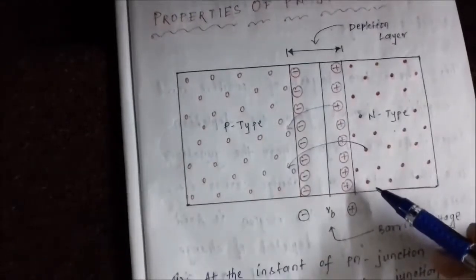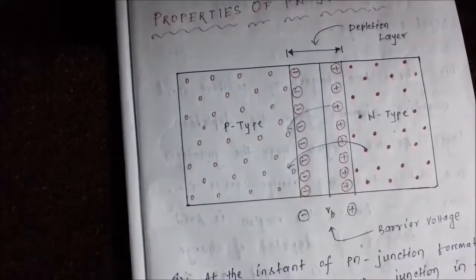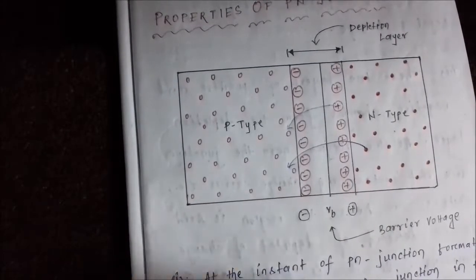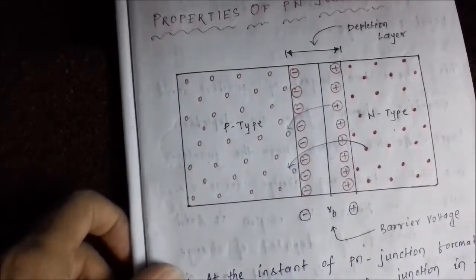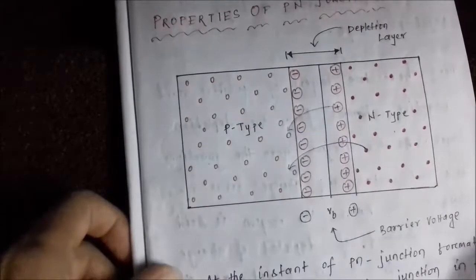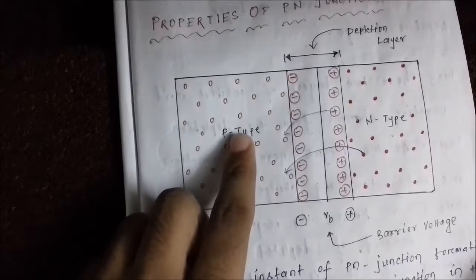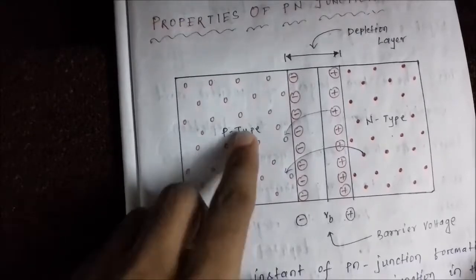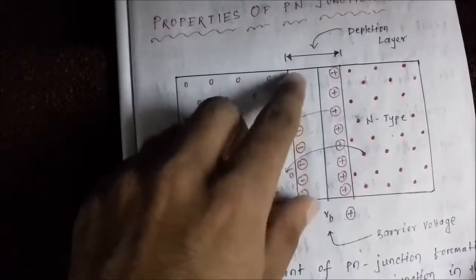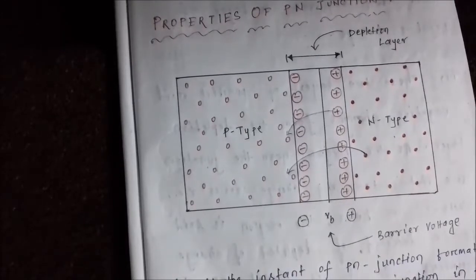Now we know that when a substance loses electrons it acquires a positive charge. As a result, the N type material acquires a layer of positive charge at its edge. As the electrons diffuse into the P type material and combine with the holes, the P type material gains excess electrons and loses its neutrality, so it acquires a layer of negative charge along its outer edge.